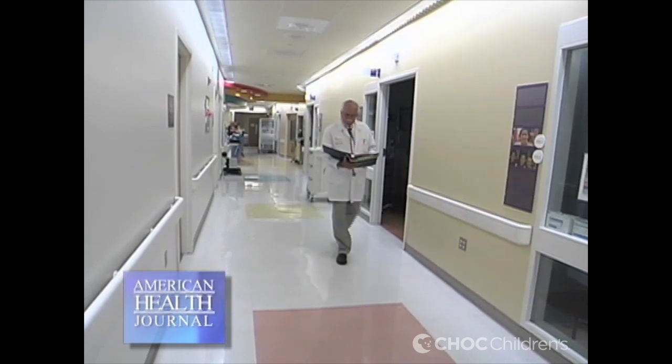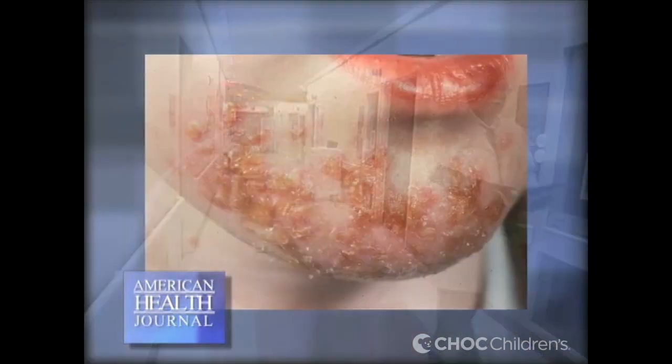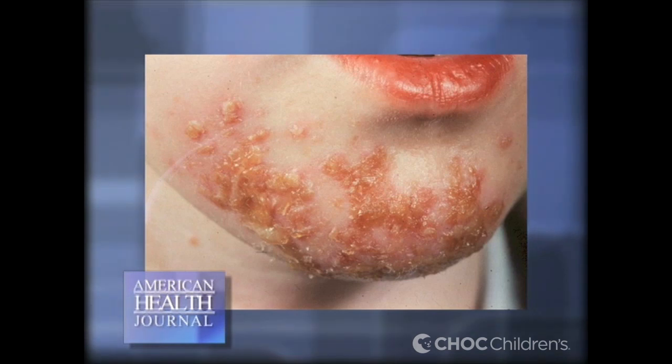Rashes can occur anywhere. The infectious rashes, like impetigo, can occur on the head or trunk, or extremities. We see herpes simplex rash, which is an infectious rash, usually around the mouth and the nose. The rashes from contact dermatitis tend to be just about anywhere on the body, as well as hives.